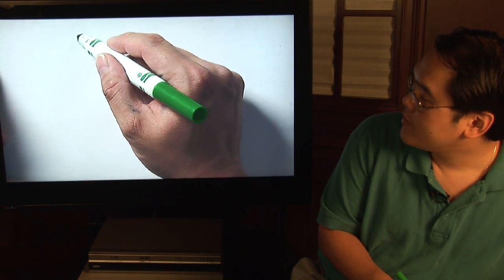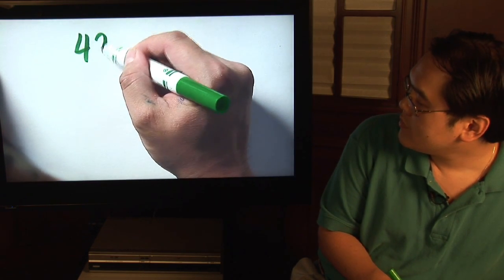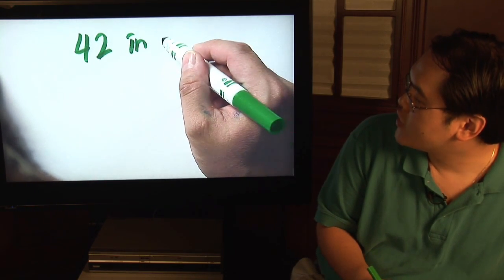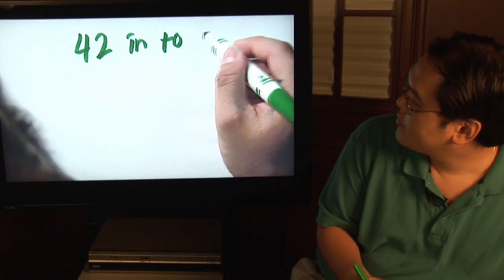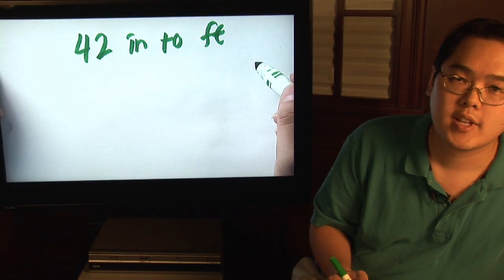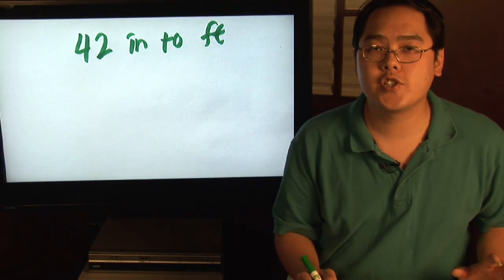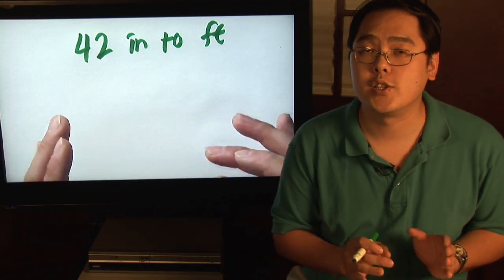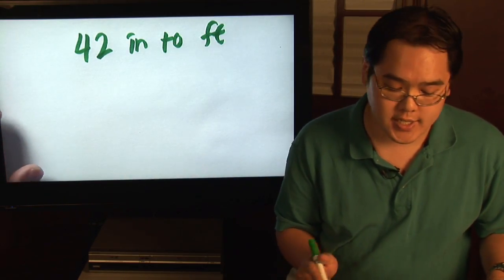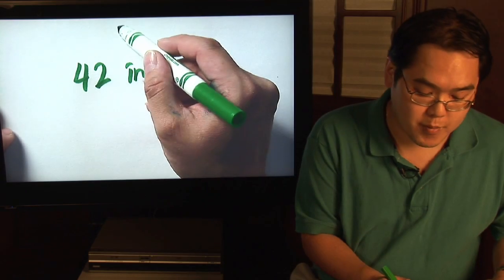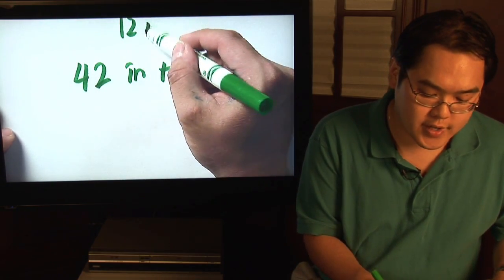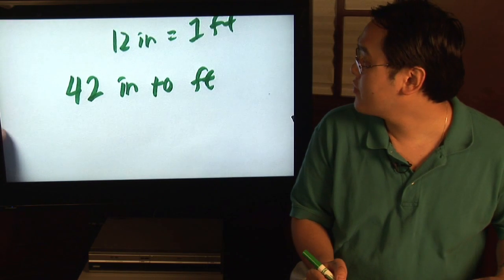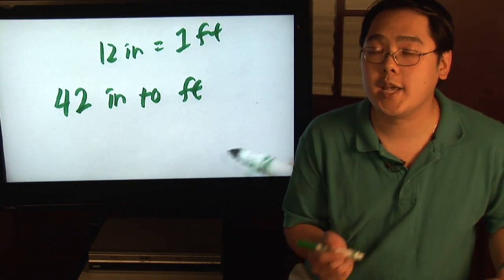Suppose you want to convert 42 inches to feet. Now the one conversion relationship that you really want to keep in mind before we can do anything here is the relationship between inches and feet. What's important then is that you need to know that 12 inches equals 1 foot. So as a result, keeping that in mind,